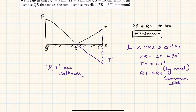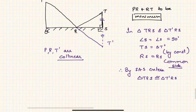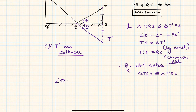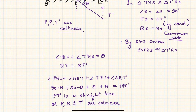By the SAS criteria, triangle TRS is congruent to triangle T'RS. Since they are congruent, if angle TRS is theta, then angle T'RS is also theta — these are corresponding parts of congruent triangles. Therefore RT equals RT'.